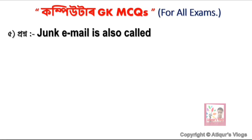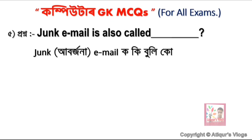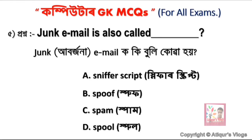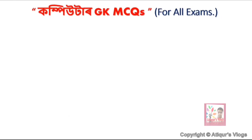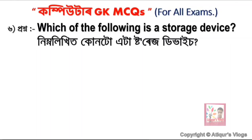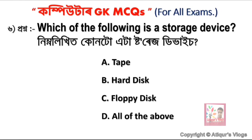Question 1.5: Junk email is also called — option A is Sniffer Script, option B is Scruff, option C is another option, and option D is All of the Above.